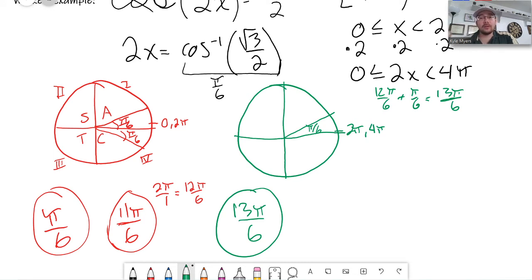So, we want to do the same exact thing for this green circle. We want this reference angle of π over 6. Well, 4π would be all the way around.